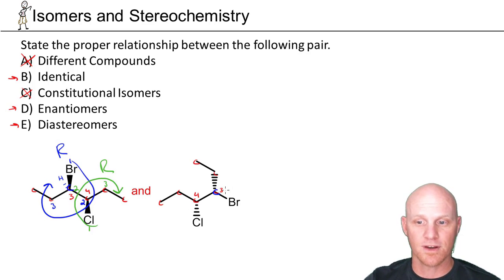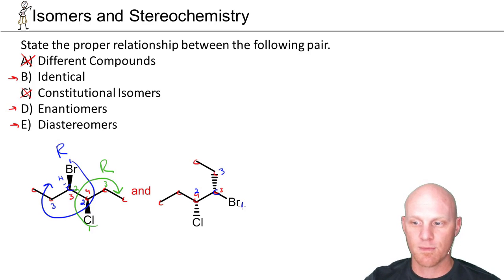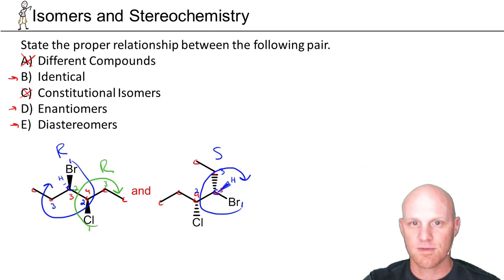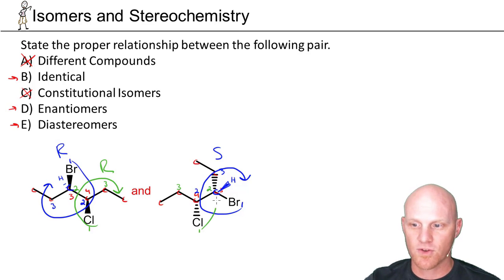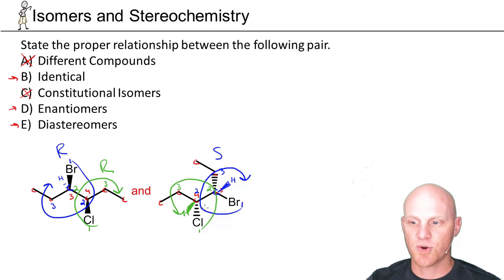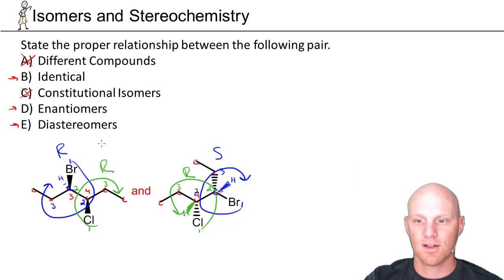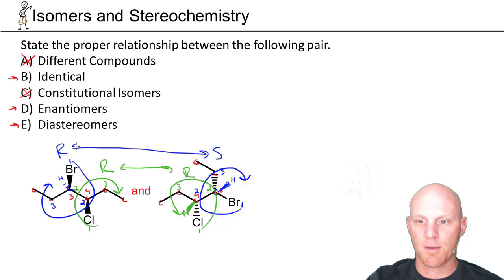Now for the second molecule, looking at carbon three with the bromine first: priority one, two, three — it looks R, but there's a hydrogen on the wedge position, so it's really S. Doing the same for the other chiral center: chlorine is number one, carbon with bromine is two, the next carbon is three — it looks S, but with hydrogen on the wedge, it's really R. So the second molecule is S,R. One chiral center is in the same configuration, one is in opposite configurations — these are diastereomers.